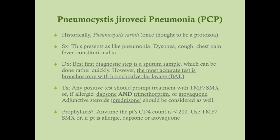To diagnose PCP, get a sputum sample — it's very specific but not very sensitive. A positive sputum confirms diagnosis, but a negative result requires further investigation via bronchoscopy and bronchoalveolar lavage. The preferred staining technique is calcifluor white stain, a fluorescent method where the sample turns fluorescent green under the microscope. This bronchoalveolar lavage is the most accurate diagnostic test for PCP.